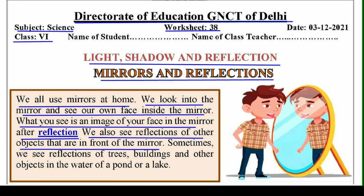We also see reflections of other objects that are in front of the mirror. Sometimes we see reflections of trees, buildings and other objects in the water of a pond or a lake. Aur kai baar hum talab mein ya jo chheel mein aap ne dekha hoga ki trees ki, buildings ki reflection hume nazar aati hai. These are called reflections.